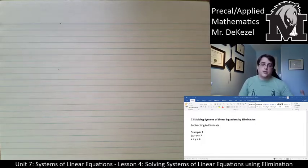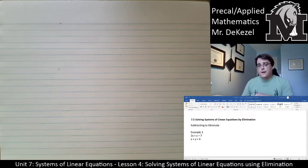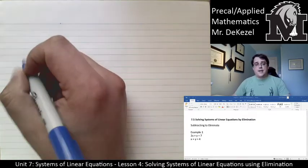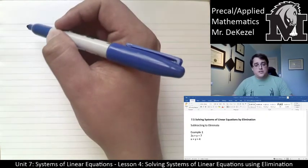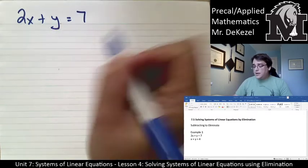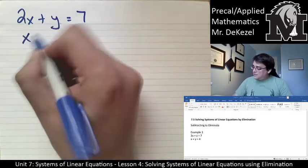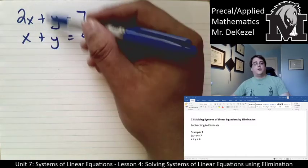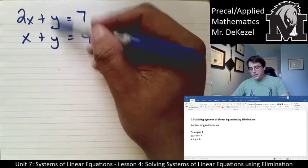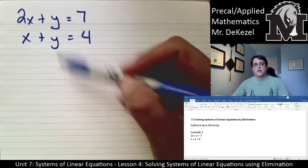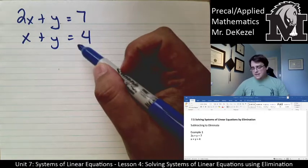We can either do elimination by subtraction, which I'll show you mostly to start, and at the end we'll talk about elimination by addition. The goal is to get two equations that have the same variable and the same number of that variable. This first equation is set out like that: we have 2x + y = 7 and x + y = 4. Our y variable has the same number of y's in the top and the bottom. Not every equation will be set out like this to start — you might need to manipulate it — but this is good.